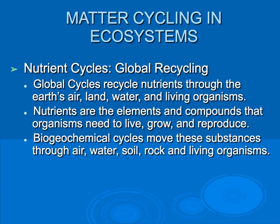So if matter cycles throughout our environment, that means that nutrients cycle. Nutrients recycle through the air, land, water, and living things. An example you're probably very familiar with is the water cycle — water is a nutrient that cycles through the air, land, water, and living organisms. Nutrients are also elements and compounds that organisms need in order to live, grow, and reproduce, such as different vitamins and oxygen.